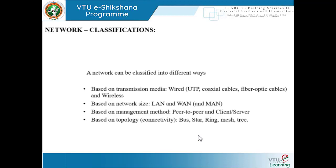How do we classify networks? Based on transmission media, network size, management method, and topology connectivity. Based on topology connectivity: bus, star, ring, mesh, and tree — the ways in which the network is connected, as discussed earlier with ring main systems. Based on management method: peer-to-peer, where you talk to each system directly, or client-server, where you contact a server which in turn helps you connect with others under that network.